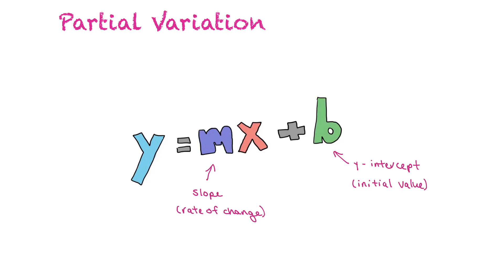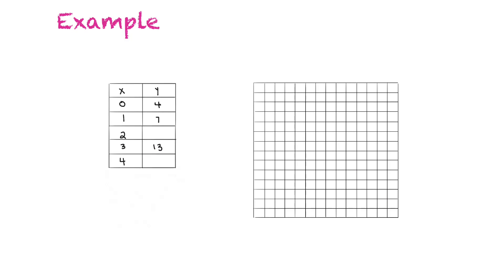Another way of describing partial variation: the graph is a straight line — still linear — but it doesn't pass through the origin at (0, 0). Instead, it passes through somewhere along the y-axis. Now we're going to work through an example where we've been given a partial table of values showing that y varies partially with x.